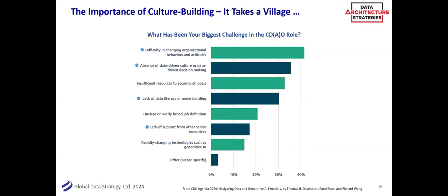From the CDO agenda survey — what are your biggest challenges? The ones marked are the people-related things: difficulty changing behaviors, absence of a data-driven culture, lack of data literacy, lack of support from other senior executives. One I'll give credit for is 'unclear or overly broad job definition' — yes, it's pretty broad, and it may evolve into several roles in larger organizations. Generative AI was actually low on the list of challenges. The biggest things are all about people. As long as I've been in the data industry, I agree: it's really about getting the culture.